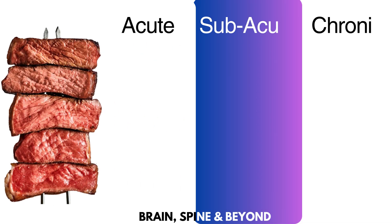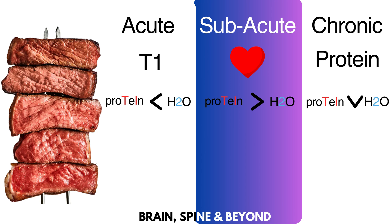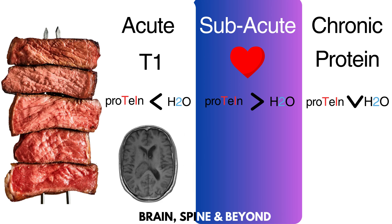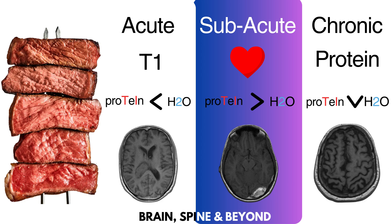To summarize: we have three phases of blood with one main fact — T1 loves protein. In the acute phase, protein is less than water, so it's iso-intense. In the subacute phase, protein increases as water dries out like heating a steak, so it becomes hyper-intense. In the chronic phase, both protein and water decrease as the steak burns — no one likes it, so it's dark.